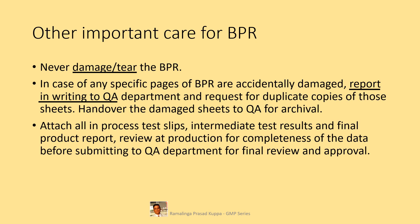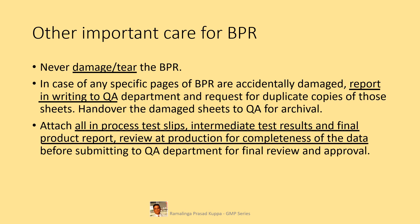Attach all in-process test slips, intermediate test results, and final product reports. Review at production level for completeness of data before submitting to the QA department for final review and approval. All related raw material indent slips, in-process test result slips, intermediate reports, deviation reports if any, and final product reports should be reviewed individually against the BPR. Confirm that everything is satisfactorily done before submitting the BPR to QA — unless all these documents are submitted, further review of the process cannot start.